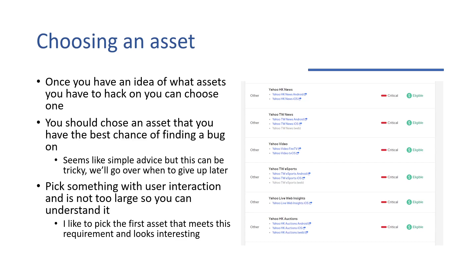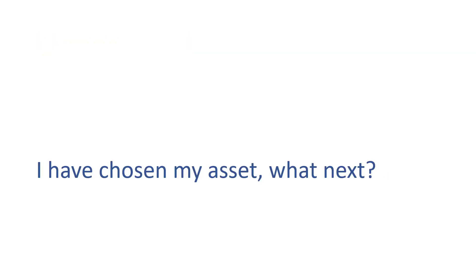I'm including this after the point on recon because in the recon phase you can find more assets. You can pick something with user interaction that's not too large that you can understand it. Personally, I pick the first asset that meets the requirements and looks interesting. I really don't do a huge amount of recon and figuring out what to hack — I just like to get started on the first thing I see, especially if I'm dealing with mobile apps with different versions of Android. Right, so you've got your list of assets, you've done some notes, you've done some recon, you've chosen an asset. What do we do next?